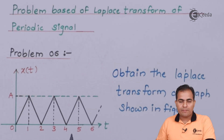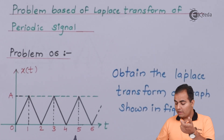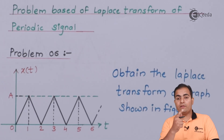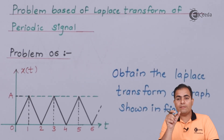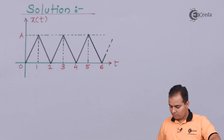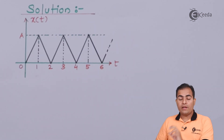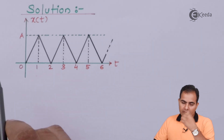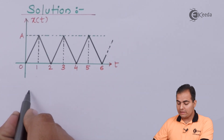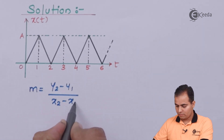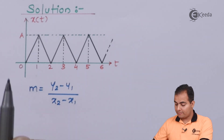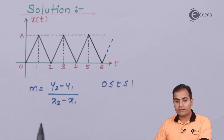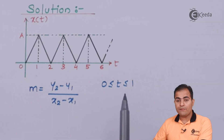Now we have calculated the time period value. We need to find the equation of the first set — the graph present in the first period, which is x1(t), defined over 0 to 2. Before writing the equation, we calculate the slope values between 0 to 1 and between 1 to 2 using the slope formula m = (y2 - y1) / (x2 - x1).